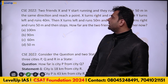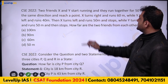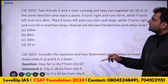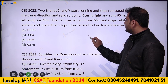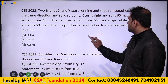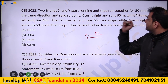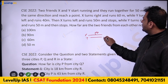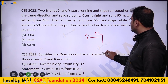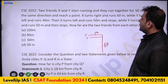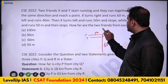First question, CIKC 2022: Two friends X and Y start running together for 50 meters in the same direction and reach a point. Then X turns right and runs 60 meters, while Y turns left and runs 40 meters.